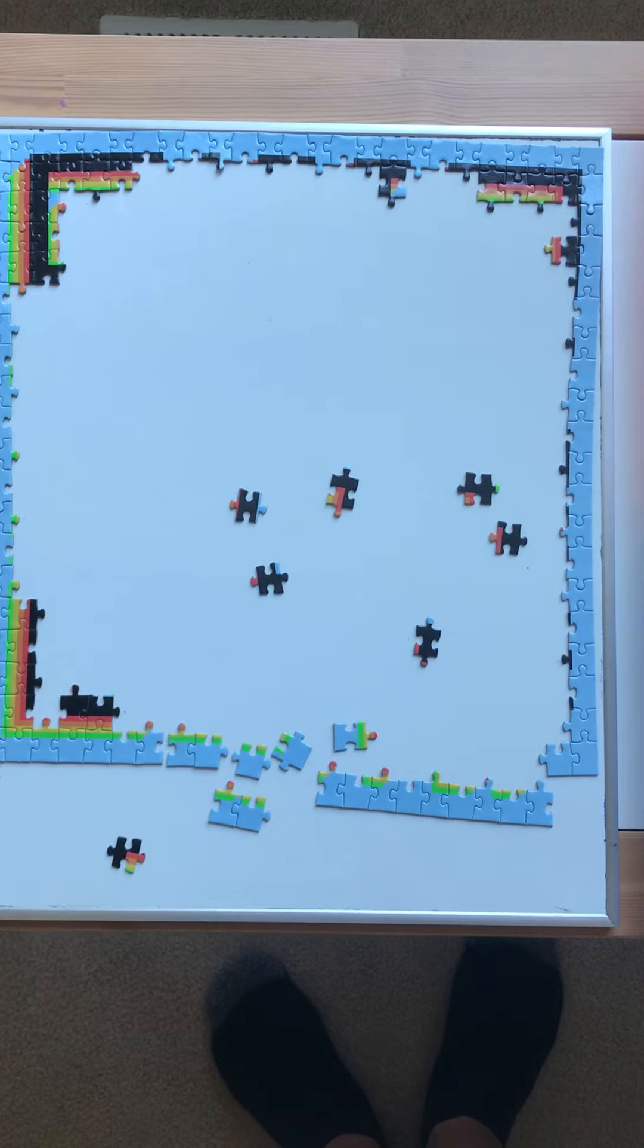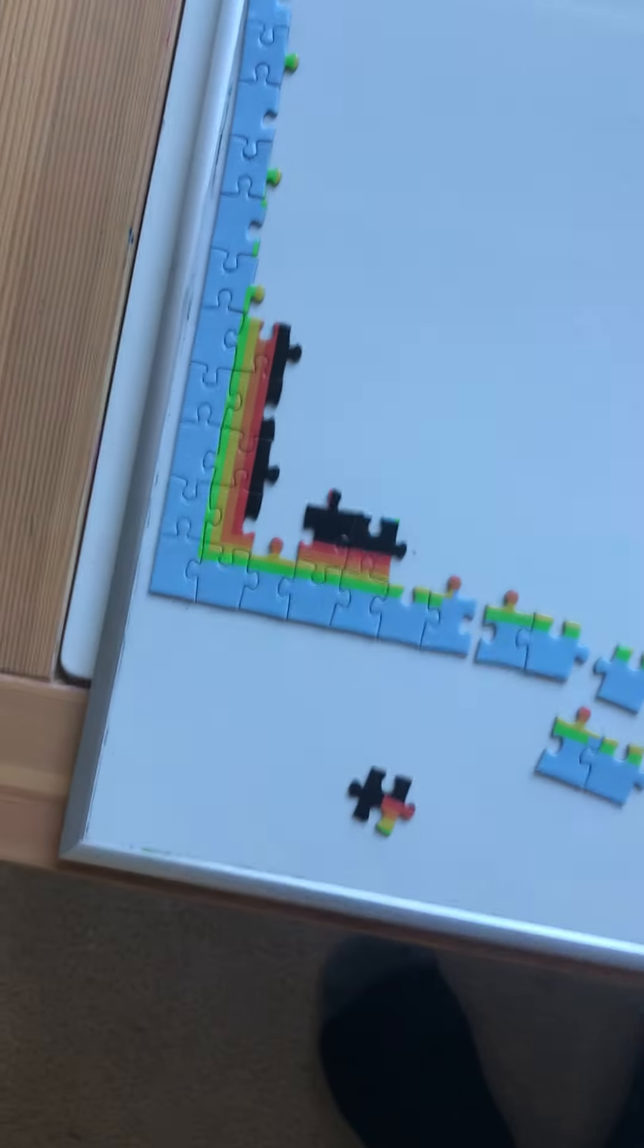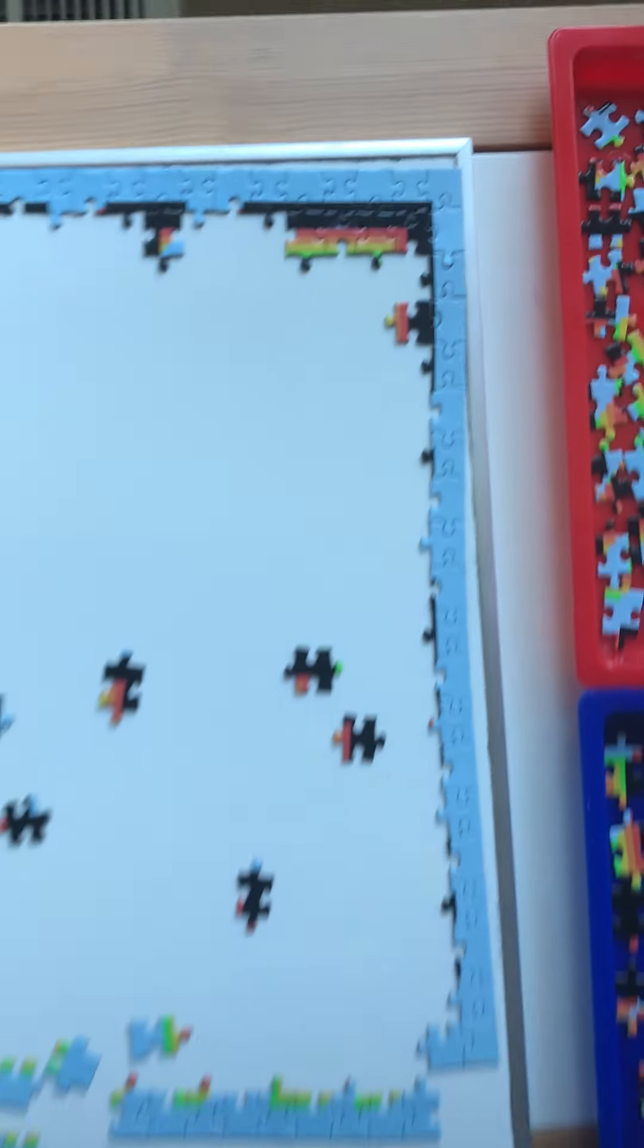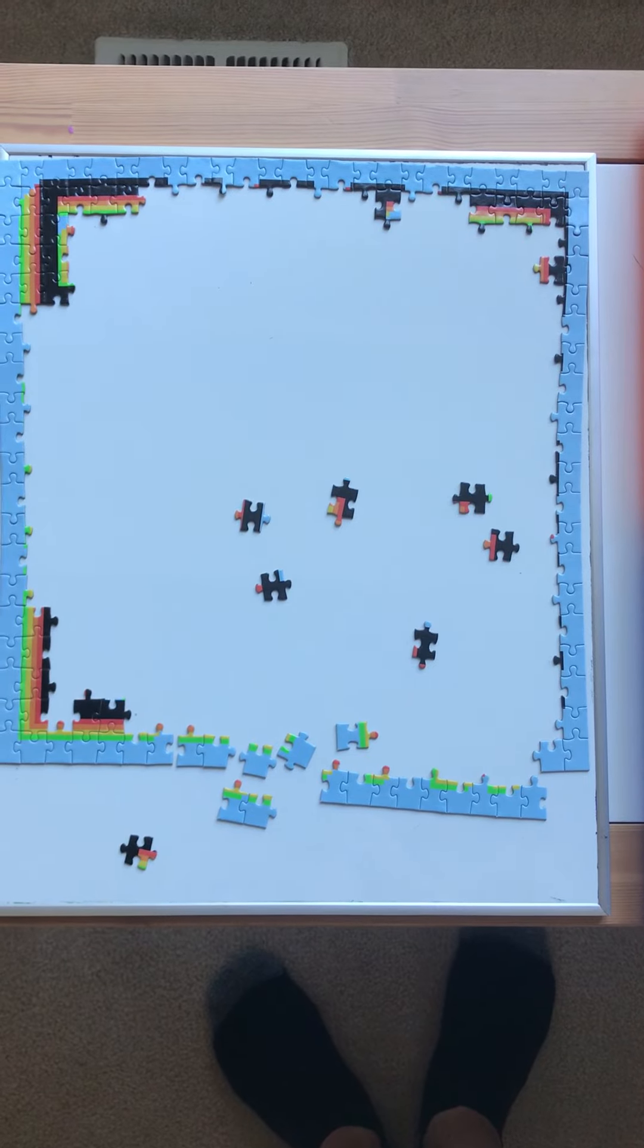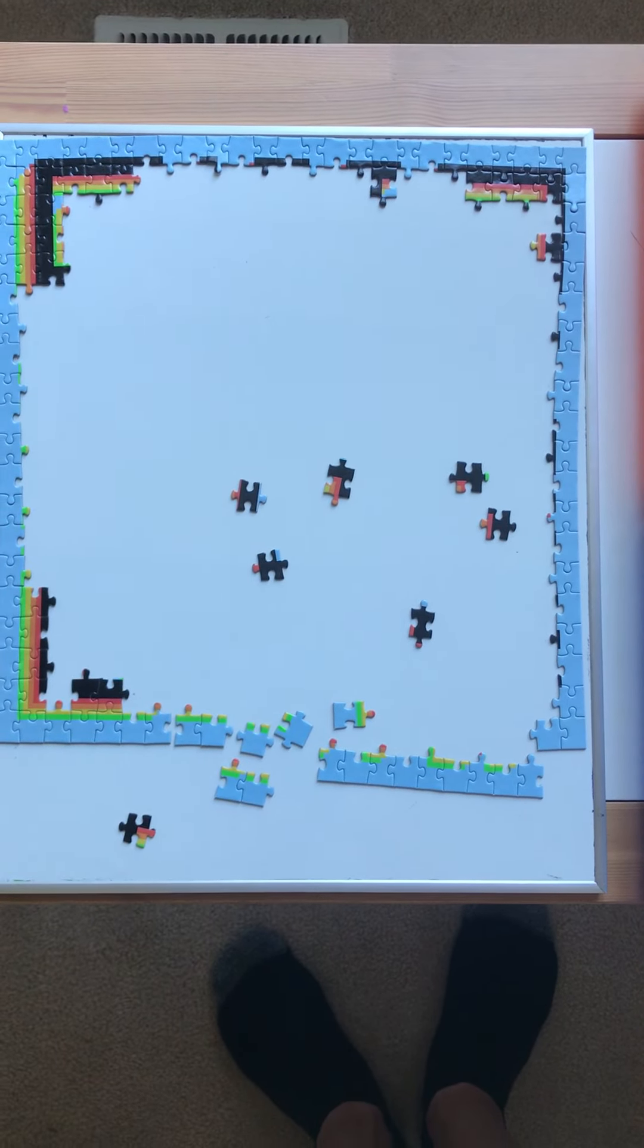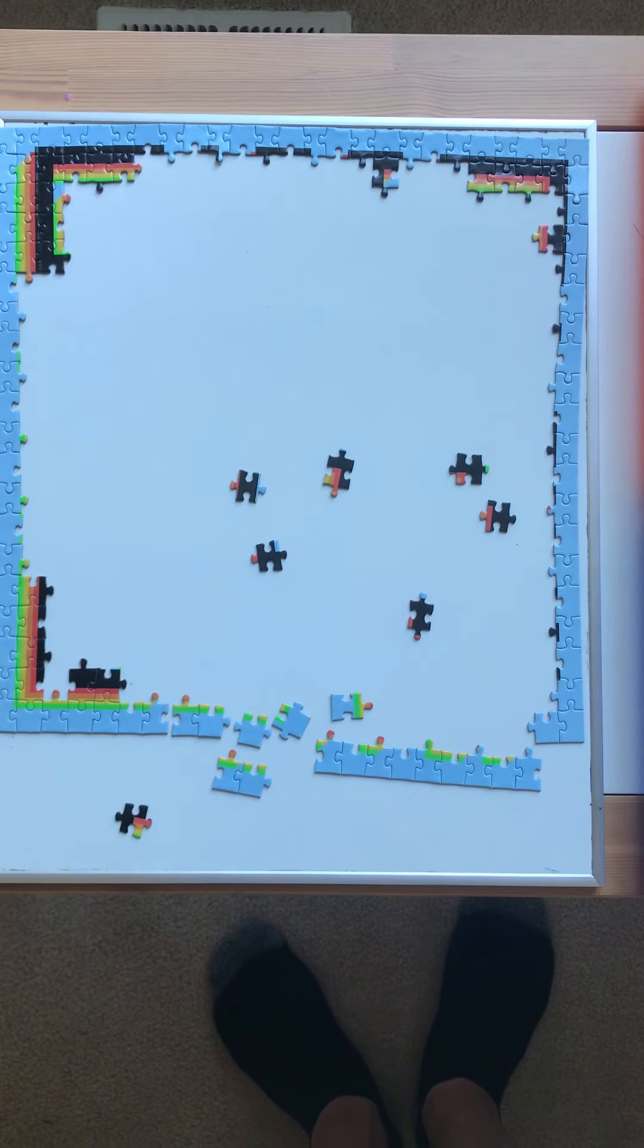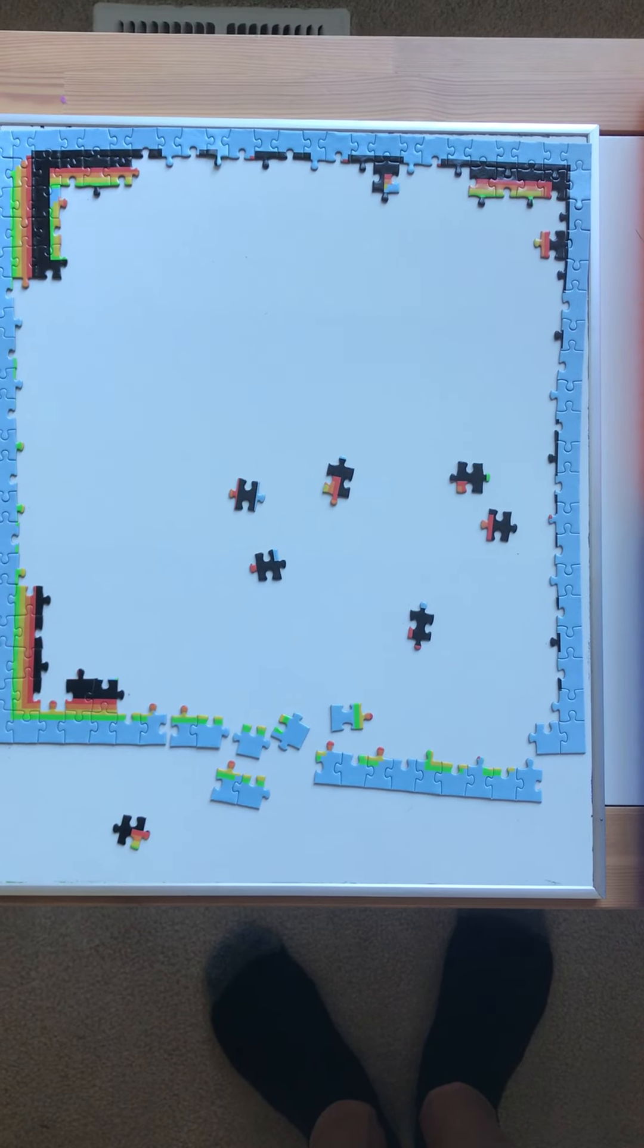Also notice that three of the four corners—this corner, this corner, and this corner—have a large square with a smaller square inside of it. So those, at least we know what it looks like.